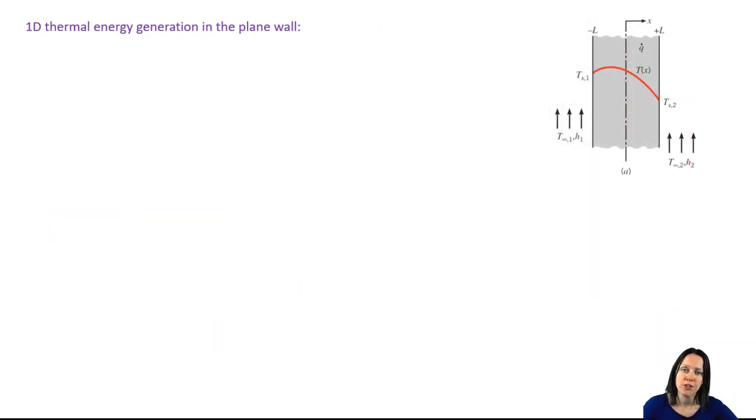Let's take the more general case for thermal energy generation, case A, where we have non-symmetrical convection on either side. Here's our heat conduction equation. Let's say these are our boundary conditions.